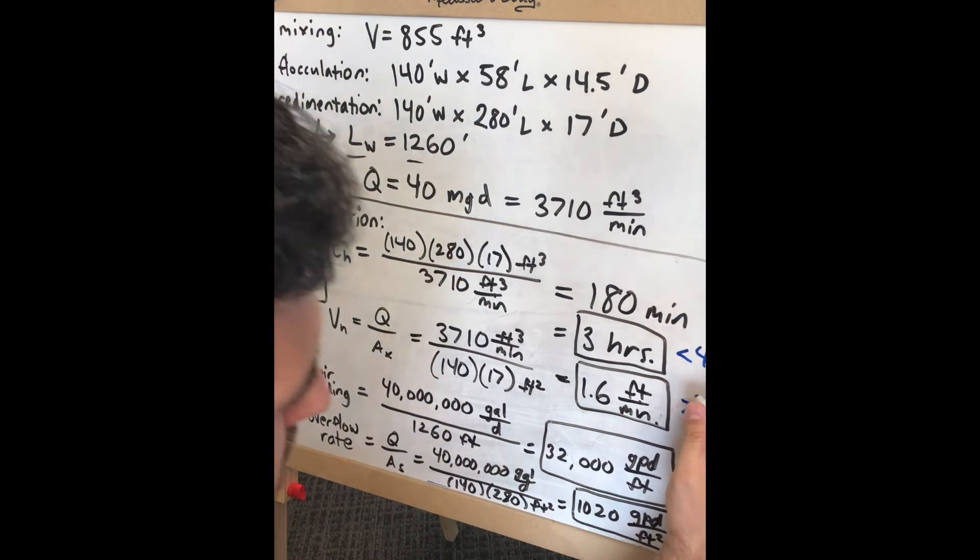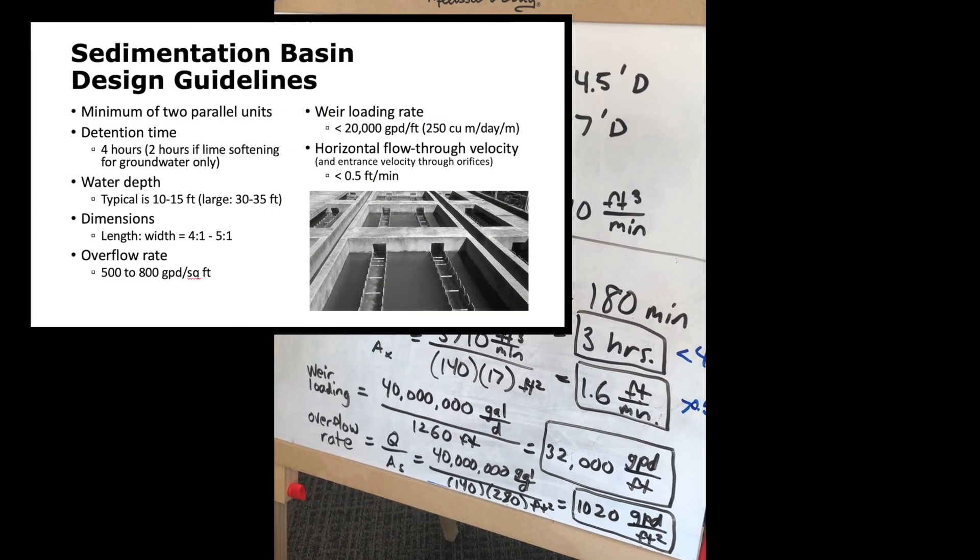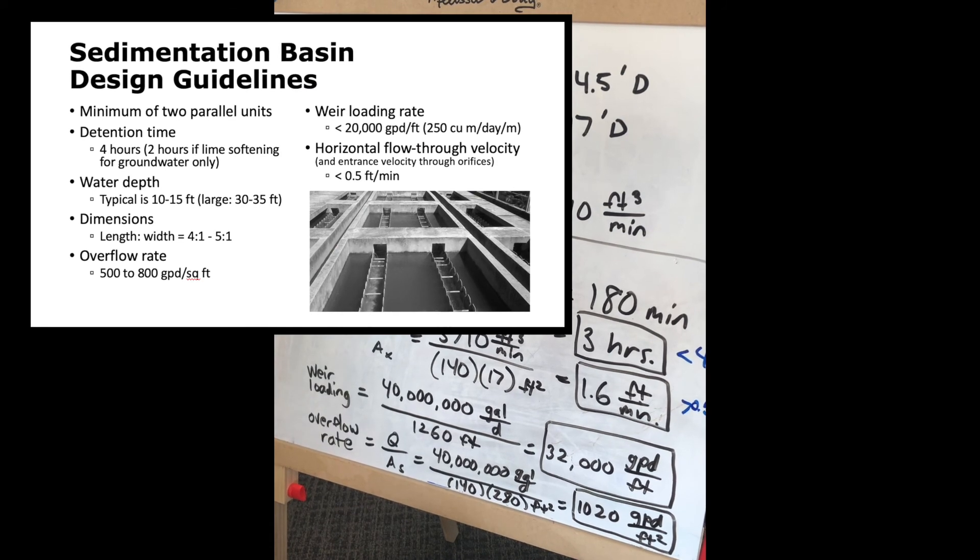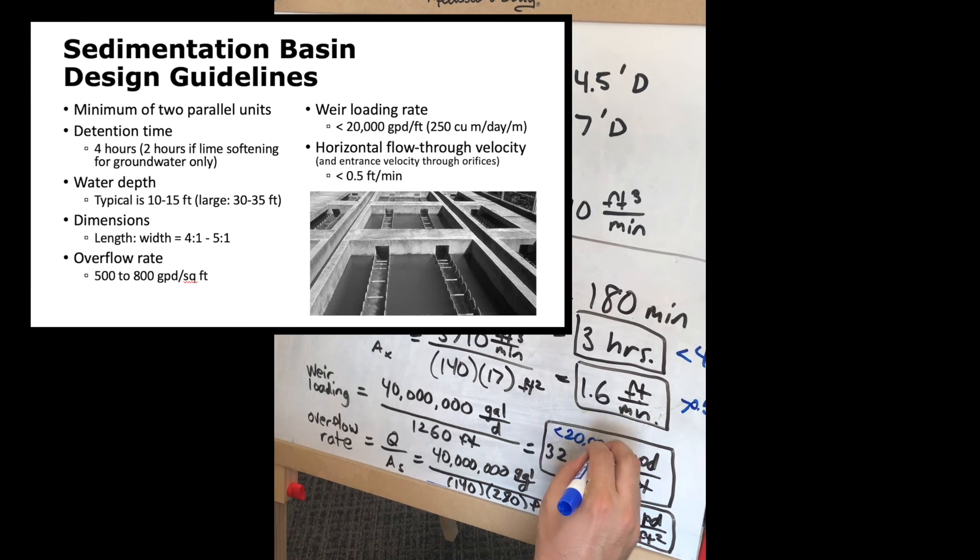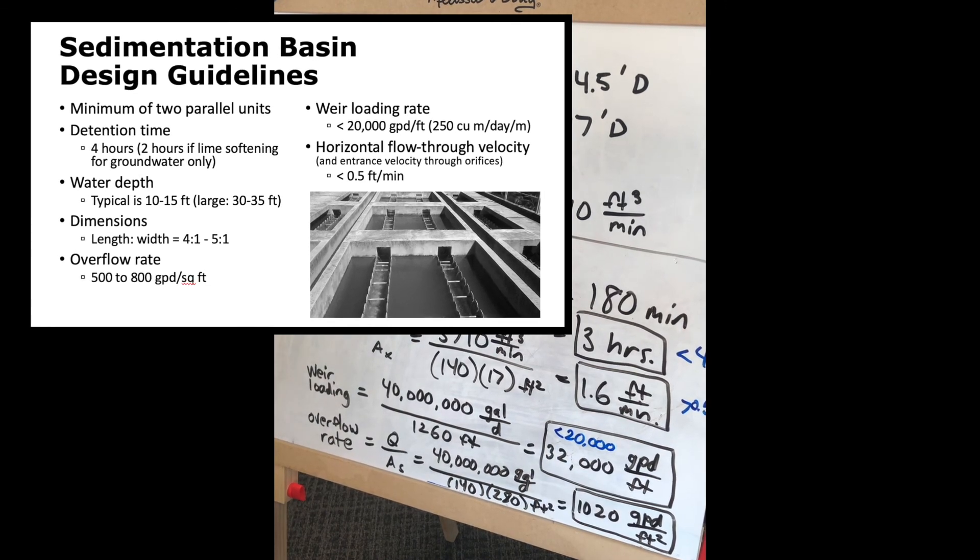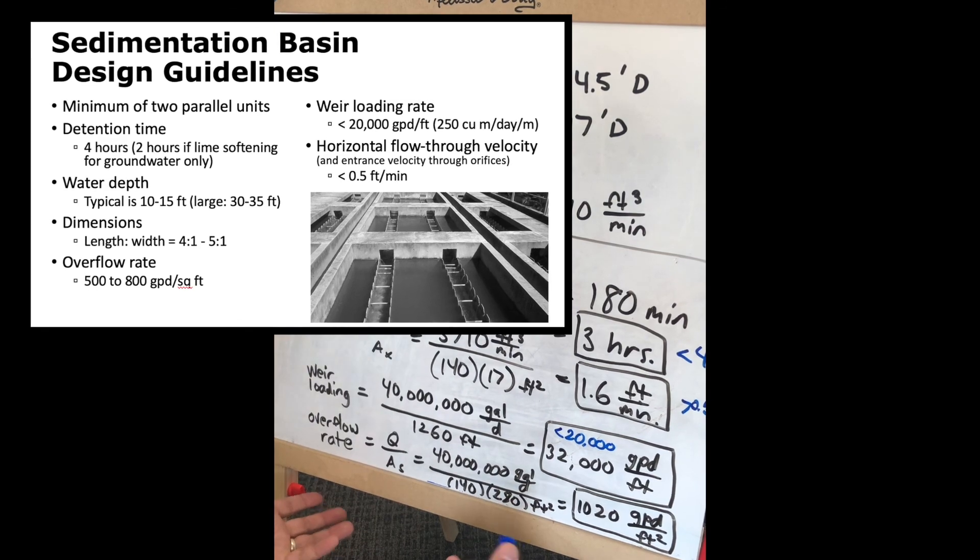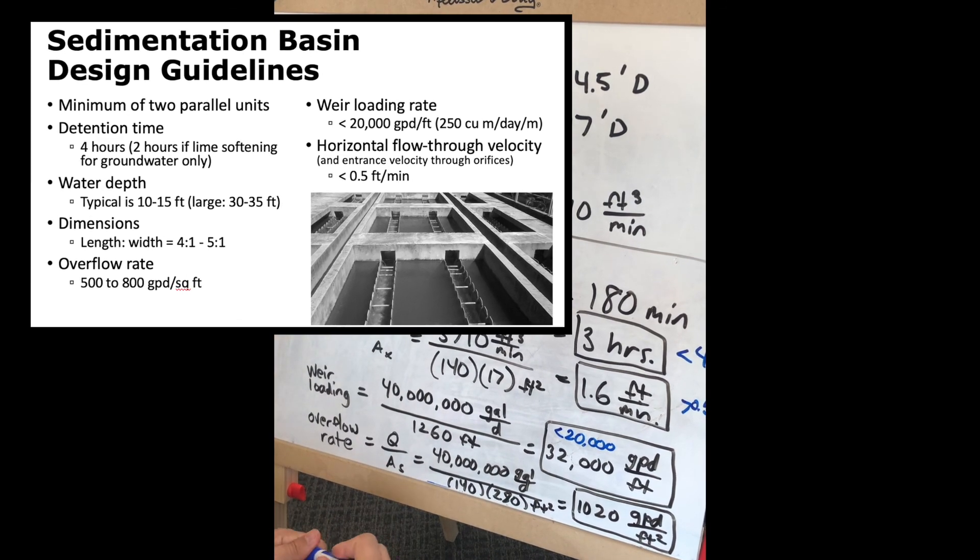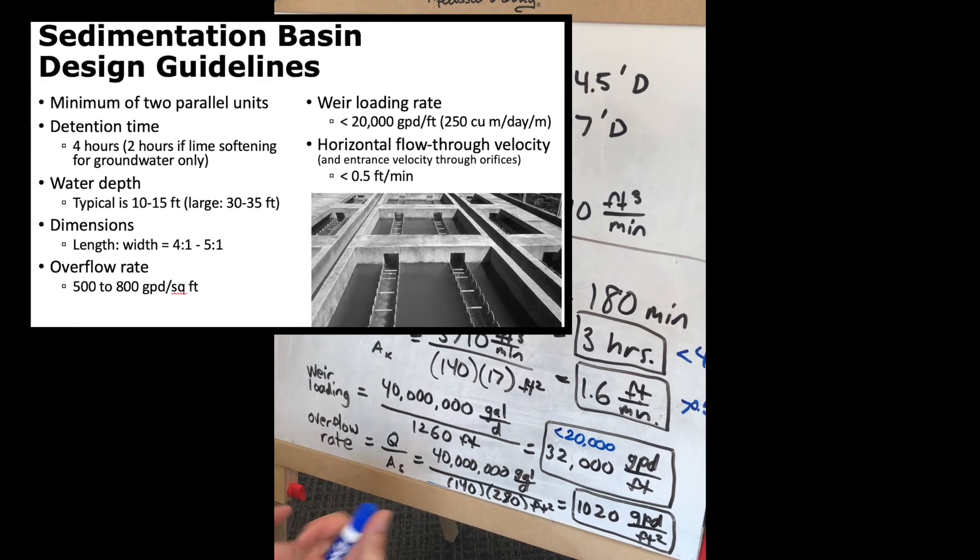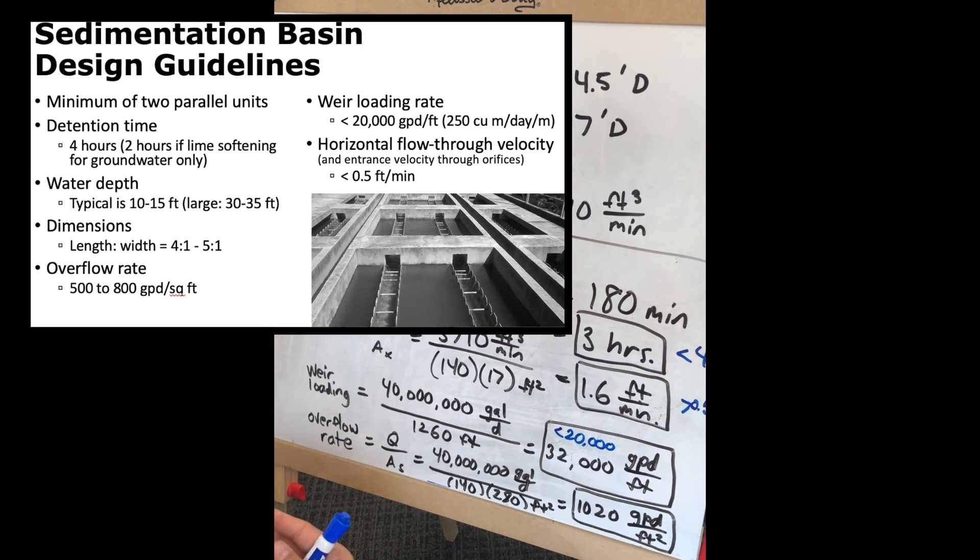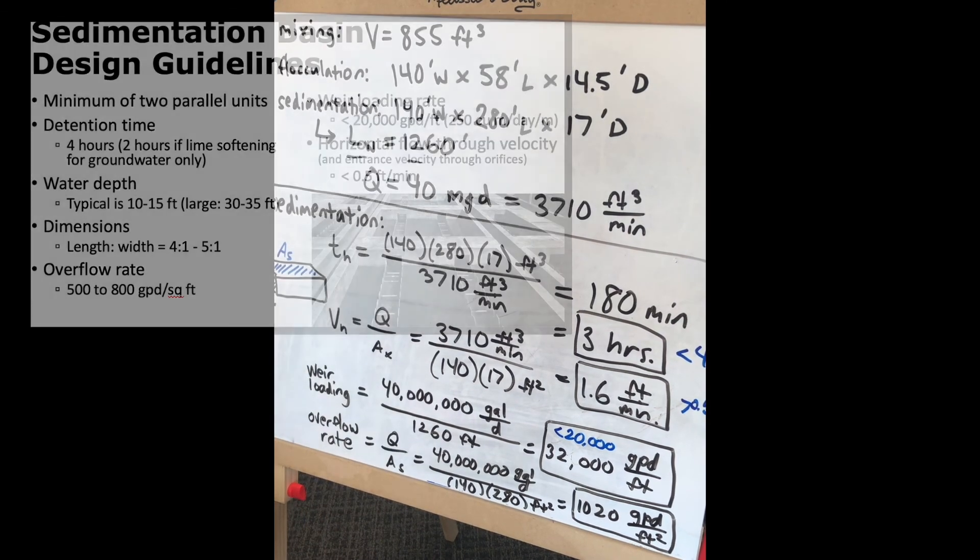We find that three hours is less than the recommended four hours, 1.6 feet per minute is greater than 0.5 feet per minute, 32,000 gallons per day per foot is less than 20,000 gallons per foot which is the design guideline, and we can do the same with the overflow rate.